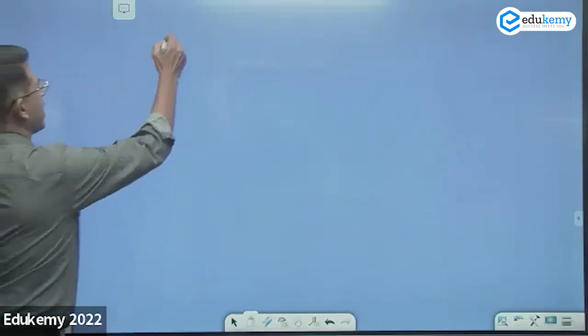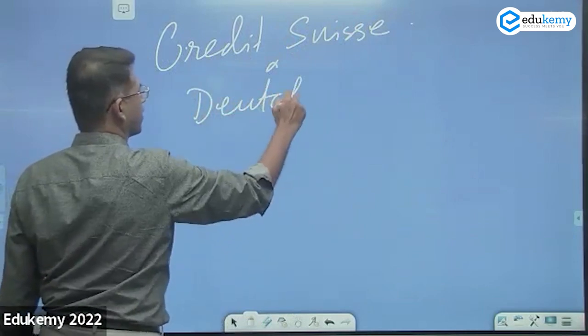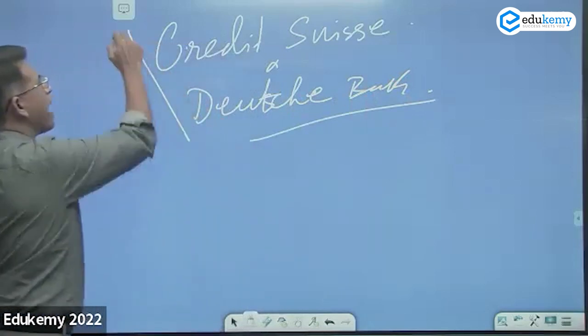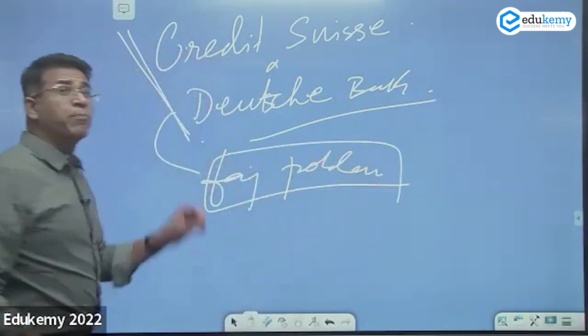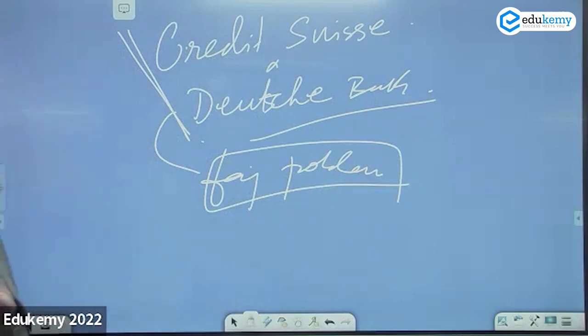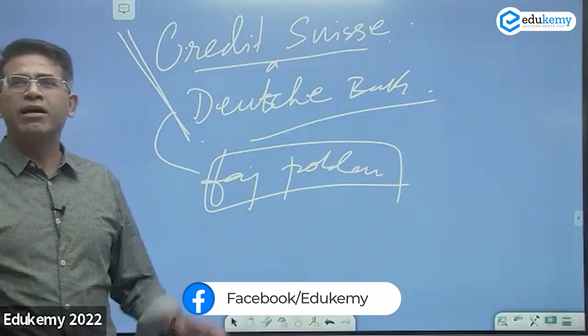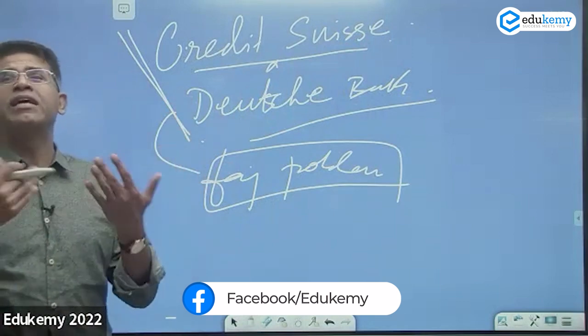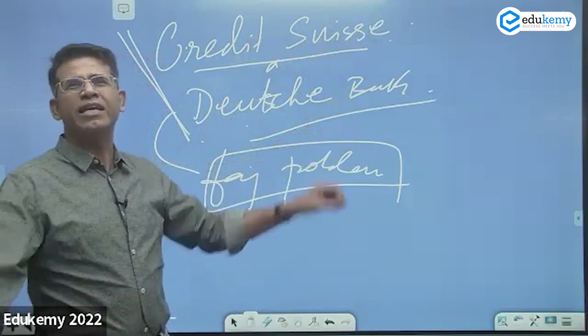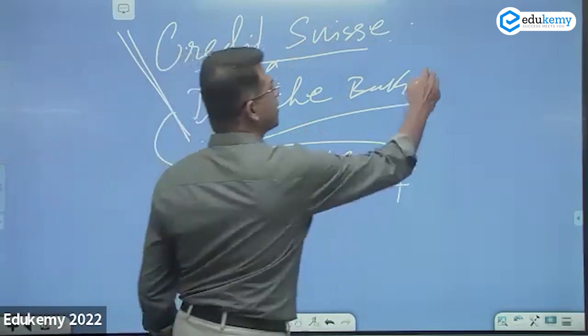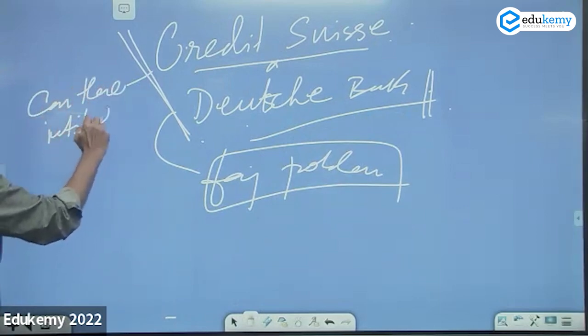In recent times, this institution Credit Suisse and Deutsche Bank - the bank of Germany - these two banks or these institutions, they are facing problems. So it probably is something like the Lehmann Brothers situation. We do not know, just speculation. But Credit Suisse Bank, it's a major investment bank of the world. It's among the 12 big banks that manages the global investments and even the credit ratings. Credit Suisse and Deutsche Bank recently has had some problems, but they are saying it's not as big a problem.